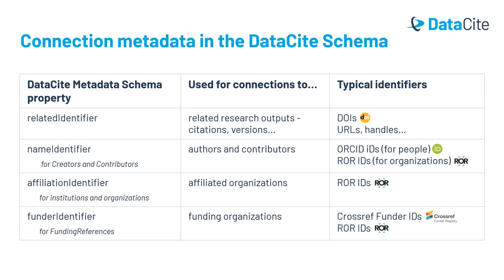There are also a handful of attributes attached to other properties that allow you to add related identifiers, including name identifier for creators and contributors, affiliation identifier for their affiliations, and funder identifier for funding references. Creators and contributors have a name identifier attribute that can be used to uniquely identify authors and contributors. For an individual contributor, typically this will be an ORCID ID, or for an organization, you might use a ROR ID. Individual creators and contributors can also have affiliations, indicated in a separate affiliation identifier property, which would typically be a ROR ID for an organization.